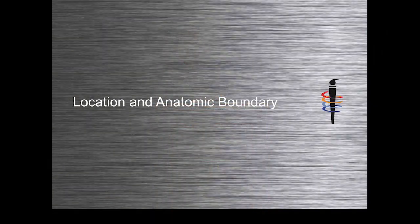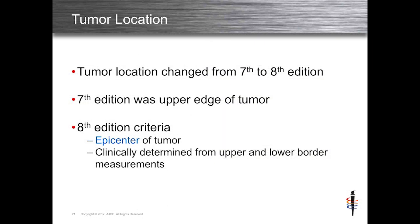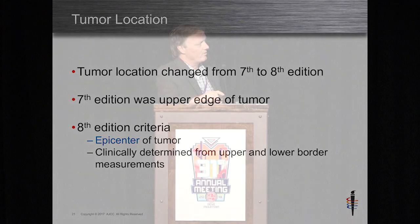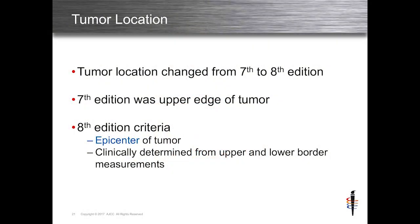Tumor location was changed so that instead of the top of the tumor being the measuring point, it was the epicenter of the tumor. It didn't make sense to describe an upper esophageal tumor if the tumor touched 20 centimeters but went all the way down to 30 or 35. So instead of calling that an upper tumor, you base it on the epicenter.